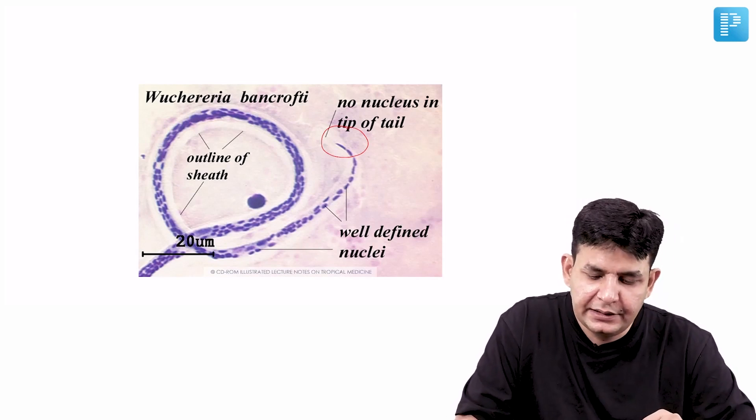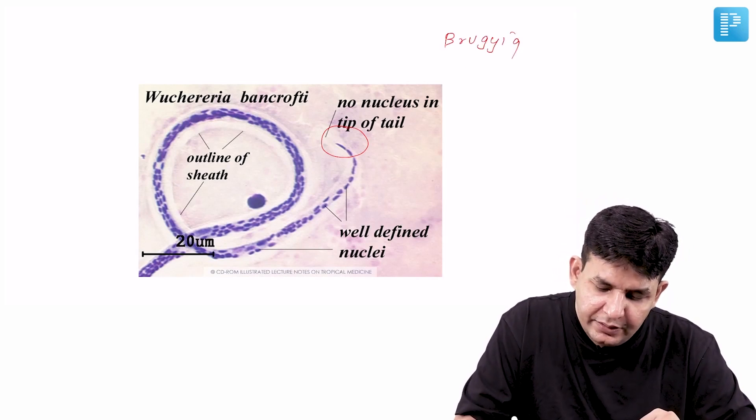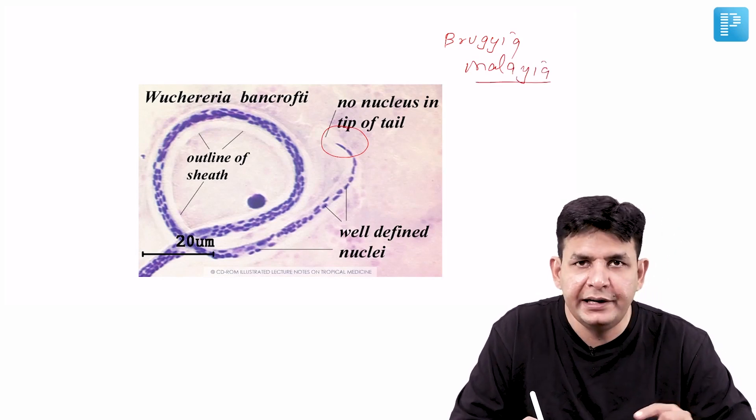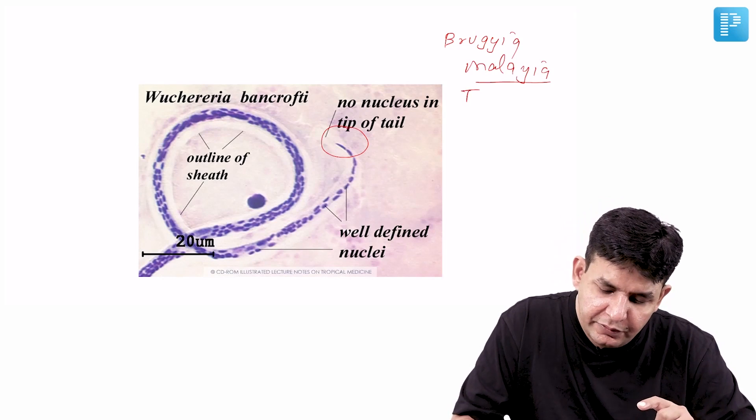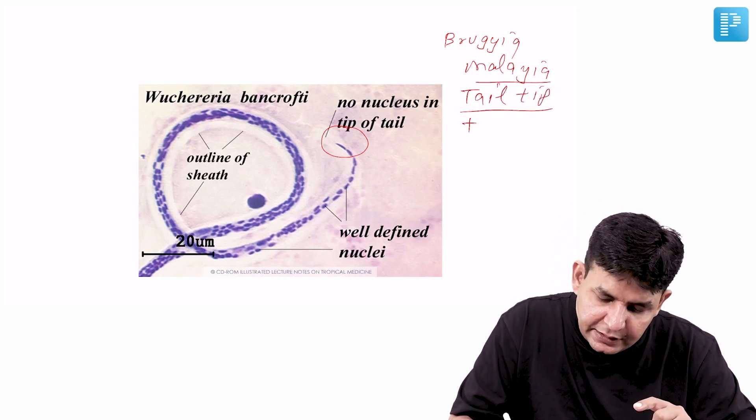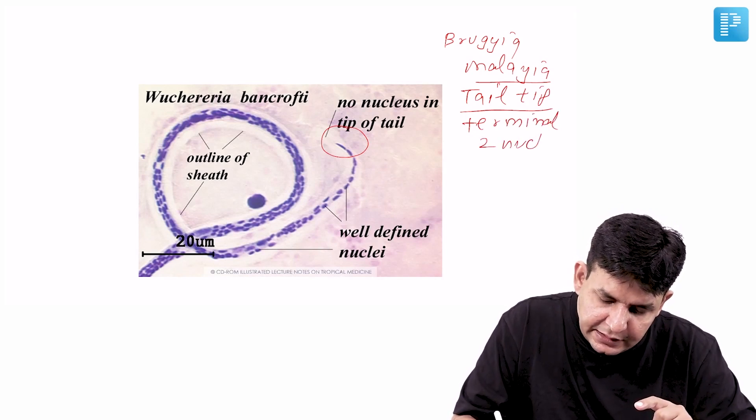Here I like to tell you that another one is Brugia malayi. When this does the filariasis, how you identify this particular one? You look out for the tail tip again, and the tail tip is having terminal 2 nuclei.